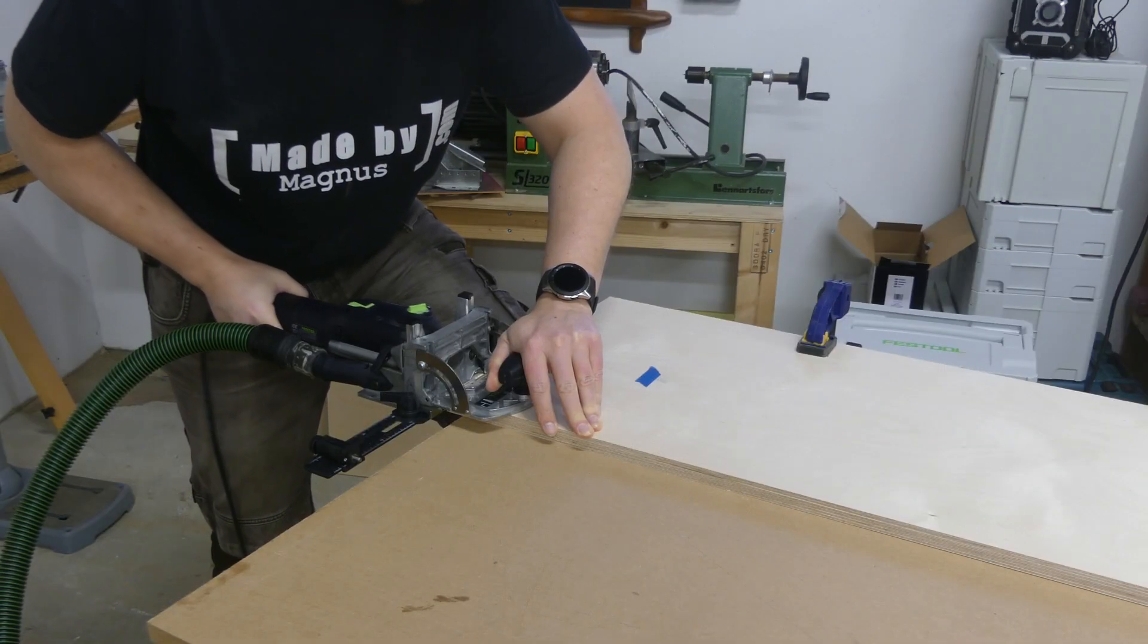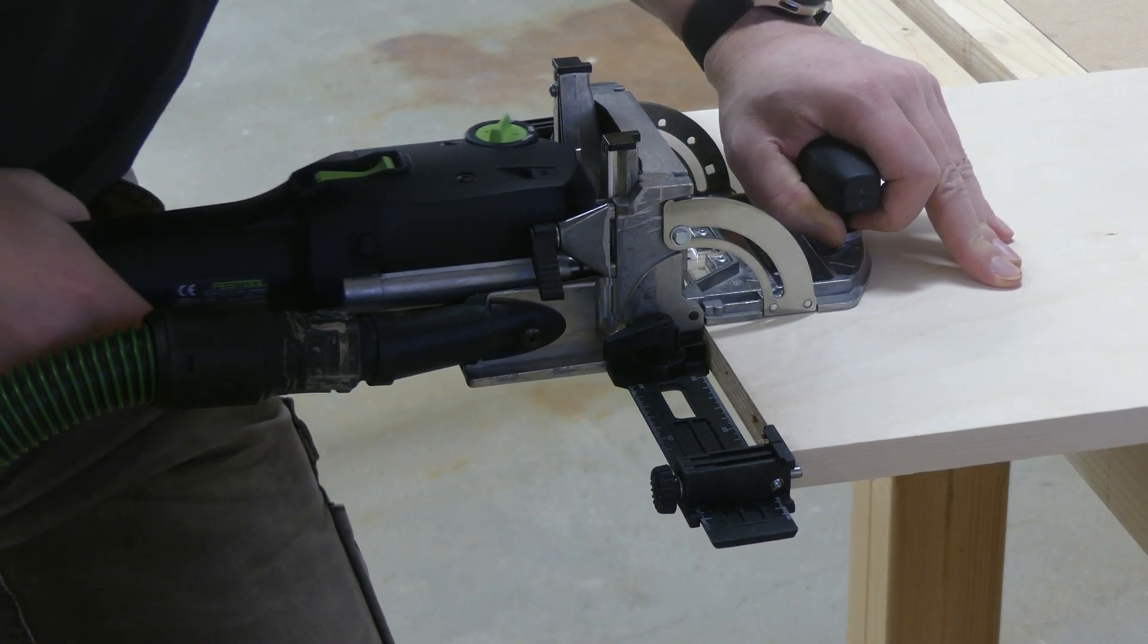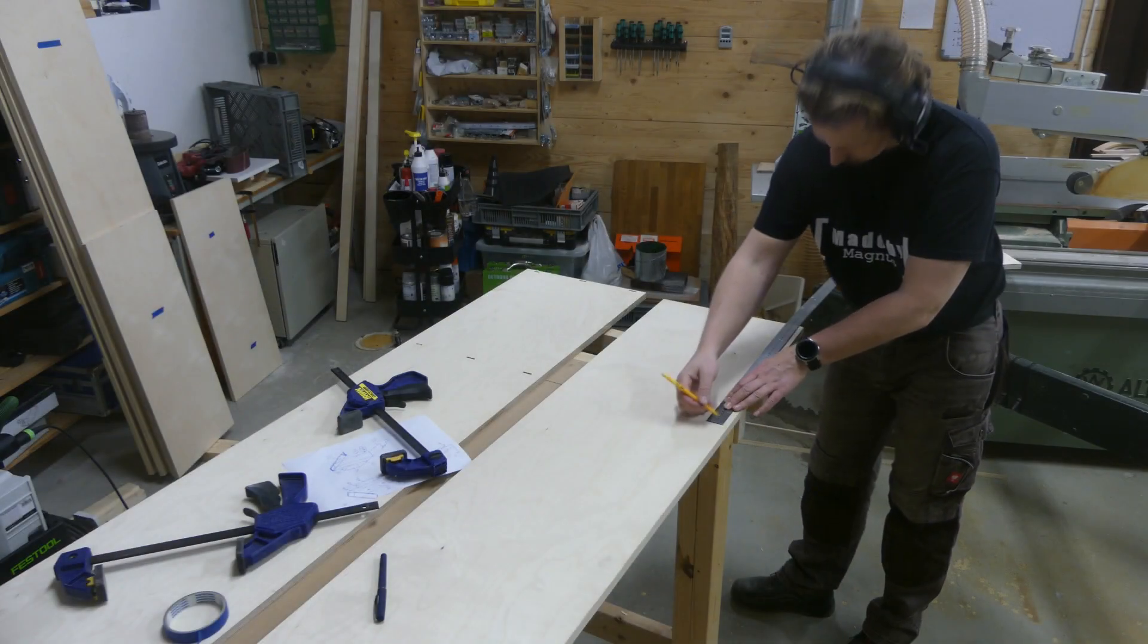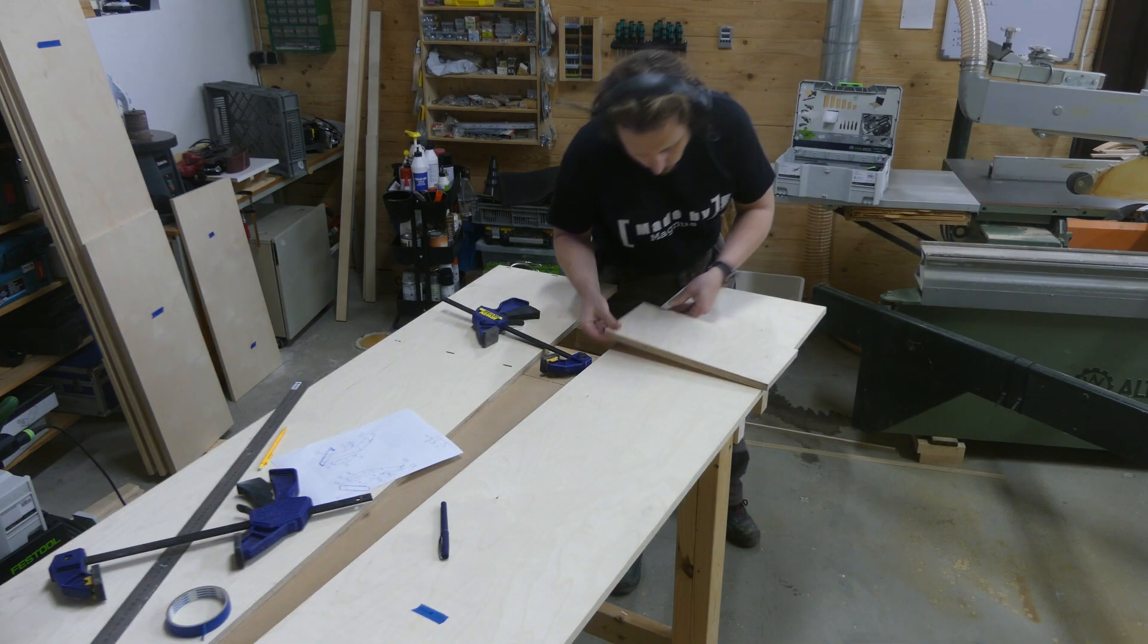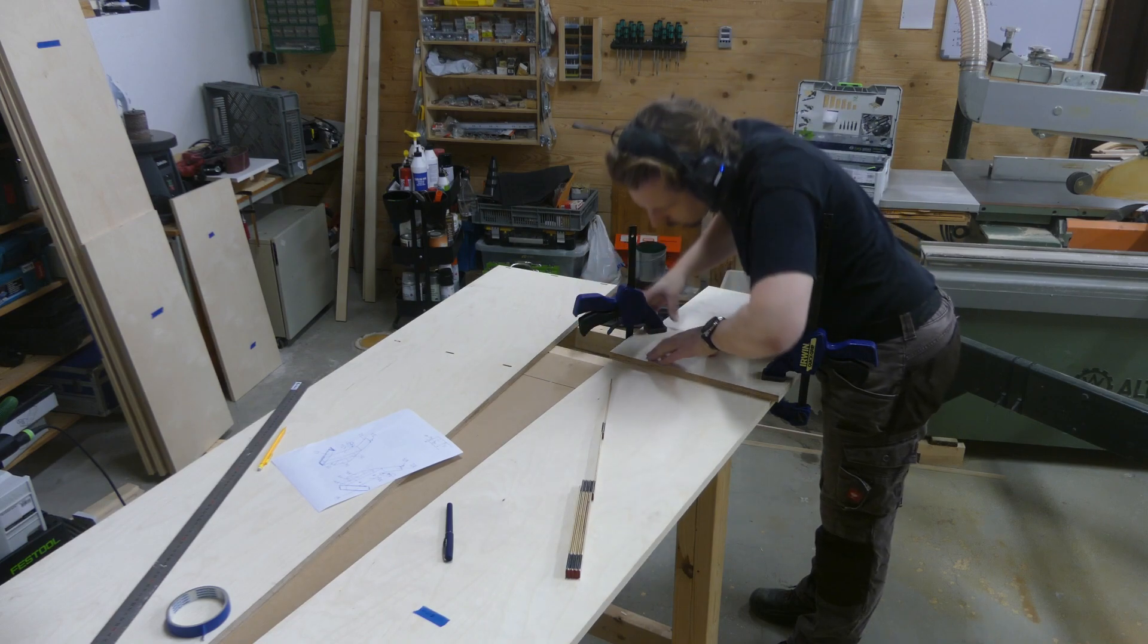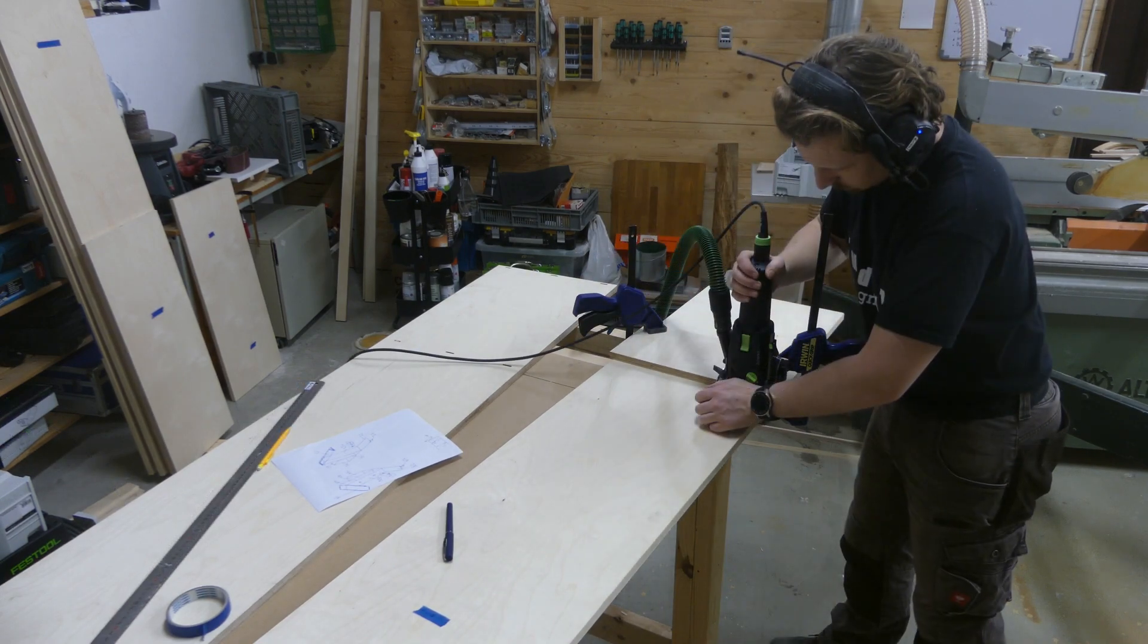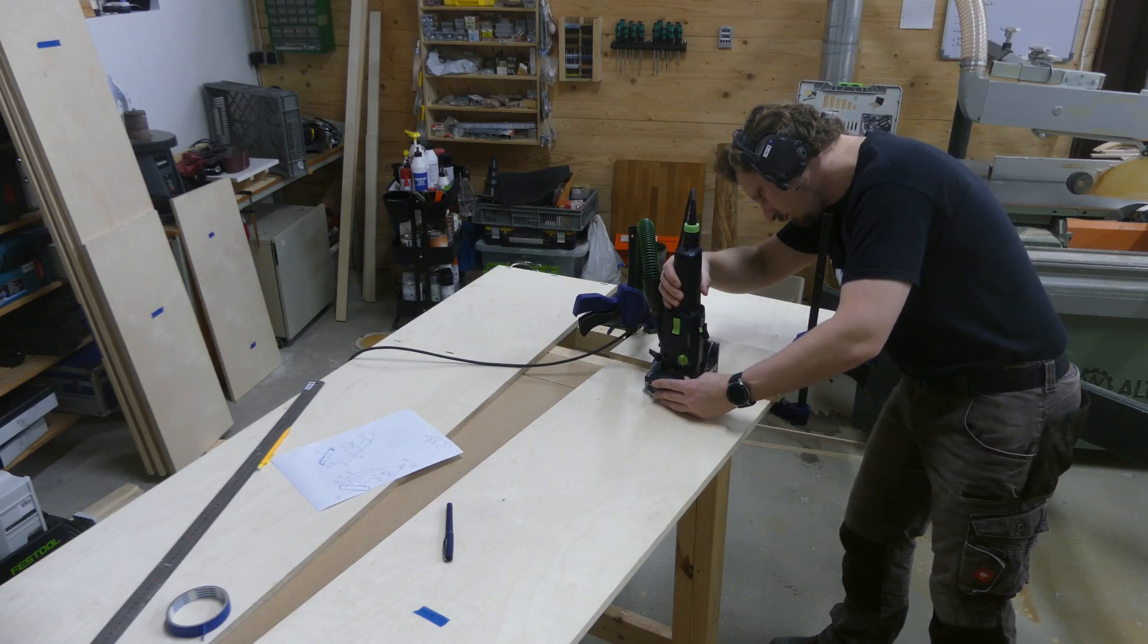To make it easy I used dominoes for joining the pieces, but it could also be done with dowels or maybe even pocket hole screws. For the fixed shelves I used a piece of scrap as a fence for the machine. This helped me to get good precision of the placement of the mortises. And there was a lot of mortises to be cut.